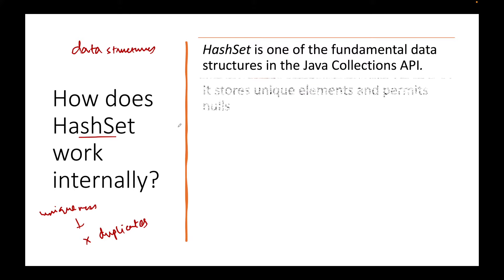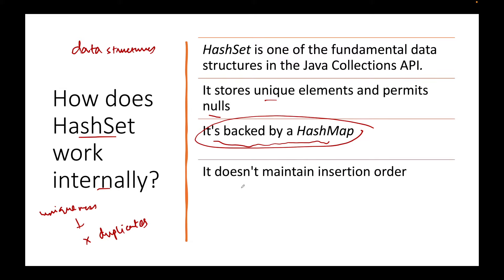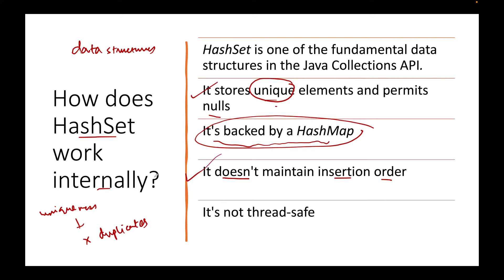So what are the properties of a HashSet? First, it can store unique elements and it can permit null values. Second, it is backed by a HashMap. Third, it doesn't maintain insertion order. So the two main things are: it guarantees uniqueness, and it doesn't maintain order. That is a trade-off — elements are unique but not in a particular order, so it is unordered but maintains unique elements.